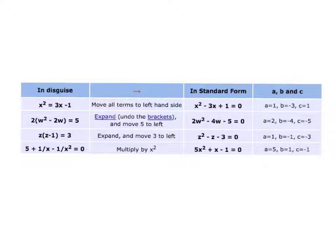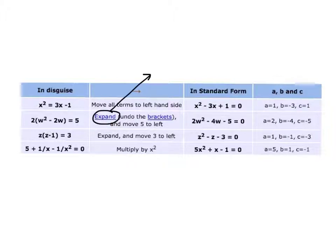Here are a couple more that don't necessarily look like they're in the right format. You decide what you copy — if you don't feel the need to copy every single part of this table, that's fine. They don't quite look like equations in standard form. We have an explanation of how to simplify to standard form so you can identify a, b, and c. For example, we could be moving all terms to the left-hand side, or we could expand — that's referring to the distributive property — undo the brackets, and move the 5 to the left side of the equal sign.